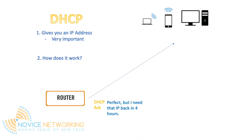The DHCP server keeps a record of the IP addresses and lease agreements. That lease time is significant — once the time expires, the client needs to renew or the IP address goes back into the IP address pool. Just like renting an apartment or hotel room, you have that address for a set time and you must renew that lease agreement once the time expires, or you are out of that IP address and must request a new one.